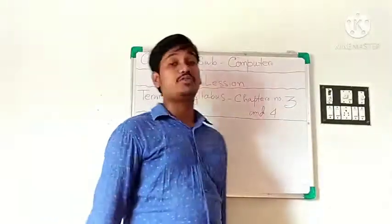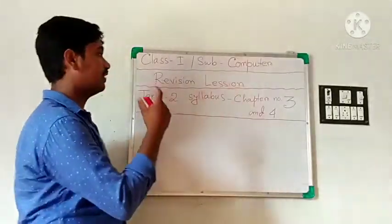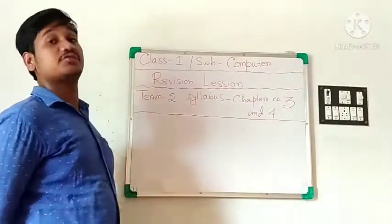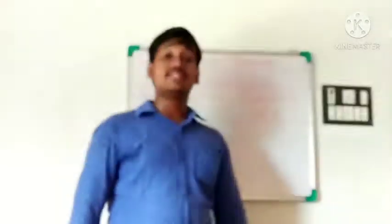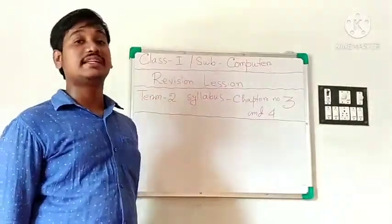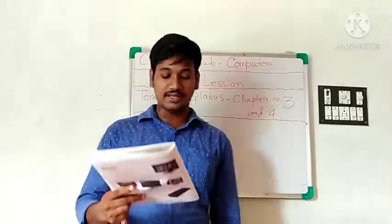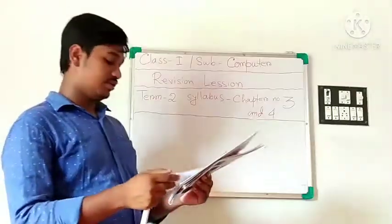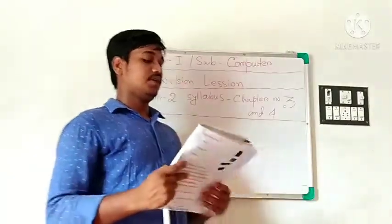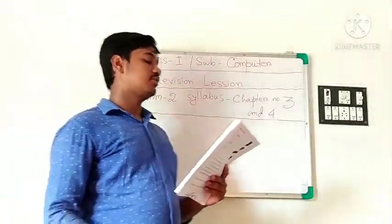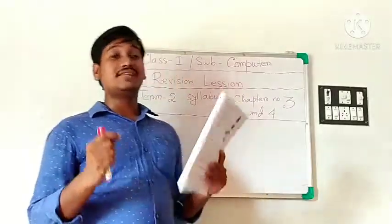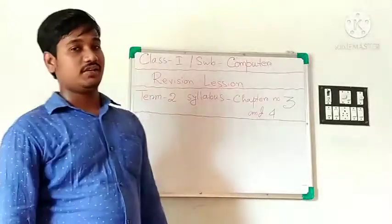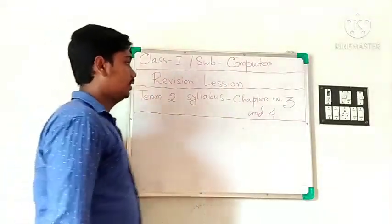CPU is known as the brain of the computer. The full form of CPU is Central Processing Unit. It works just like the brain of a human being. CPU stands for Central Processing Unit. It helps a computer to think and do work, and it controls all other parts of a computer.